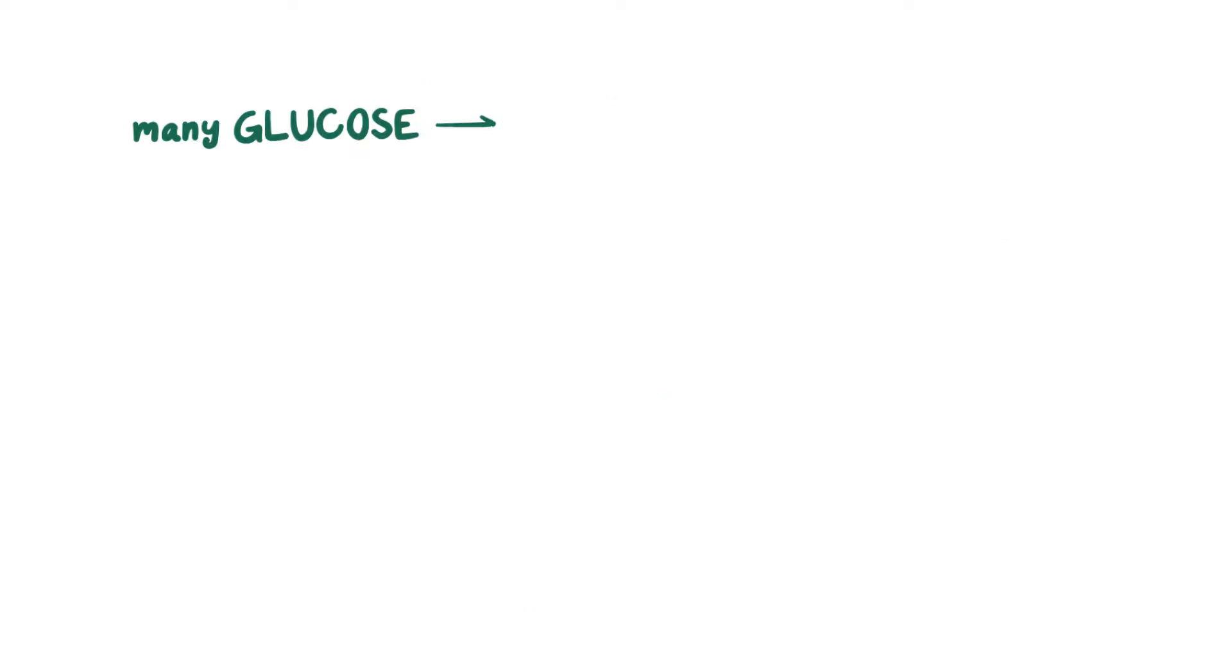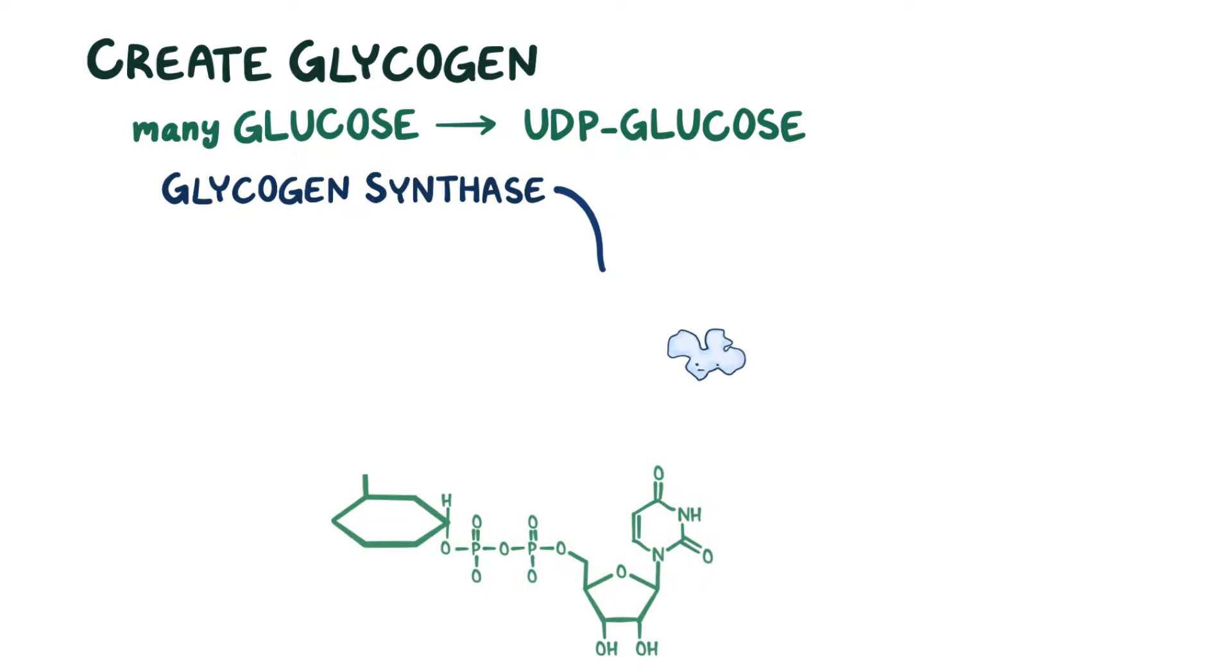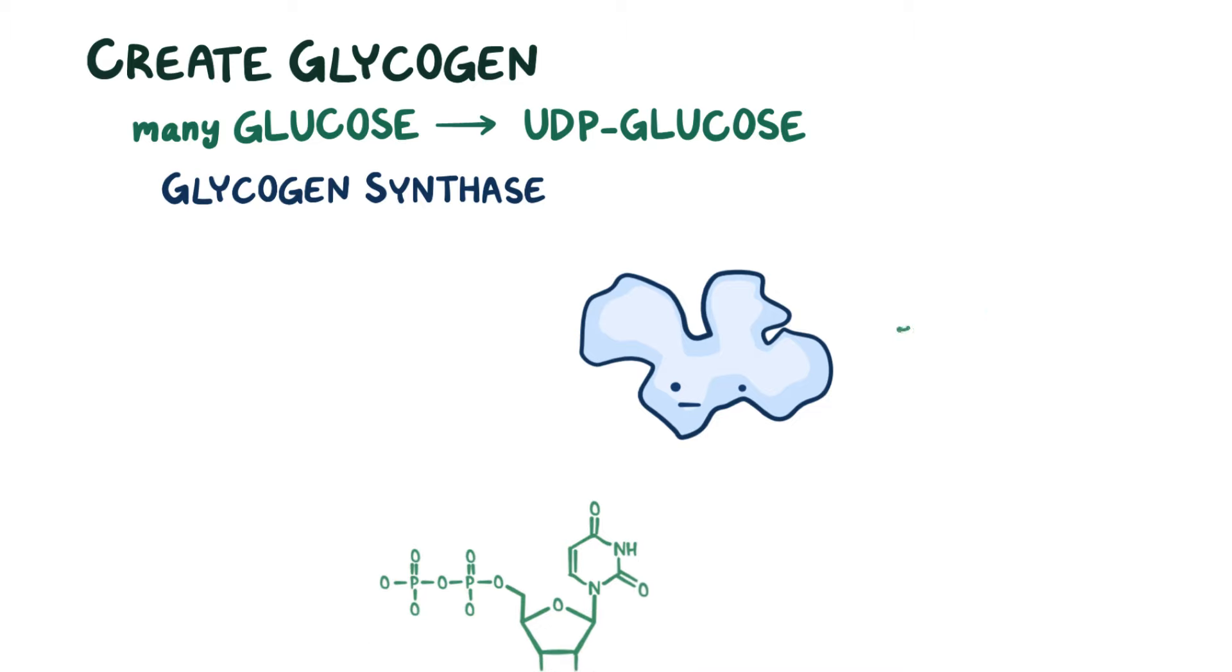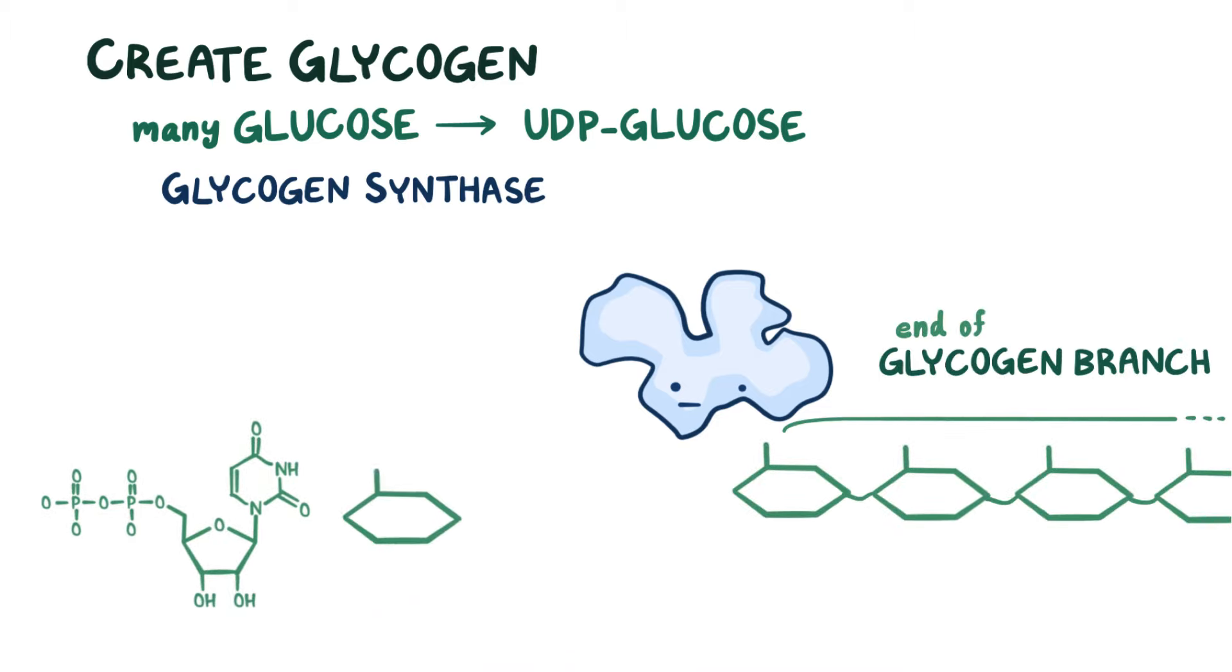Once many glucose molecules are converted into UDP glucose molecules, we're ready to create glycogen. An enzyme called glycogen synthase catalyzes the attachment of the glucose part of UDP glucose to another glucose residue at the end of the glycogen branch, forming an alpha-1,4 glycosidic bond. It's almost as if the glucose molecules are holding hands. And in addition to prolonging the glycogen chain, another byproduct of this reaction is UDP.